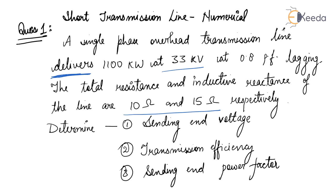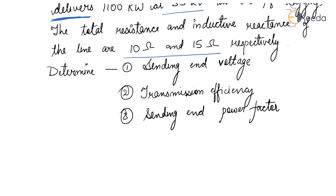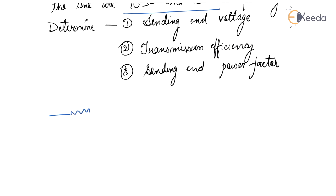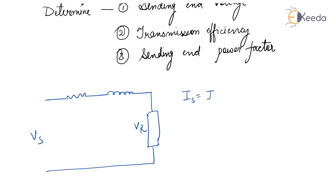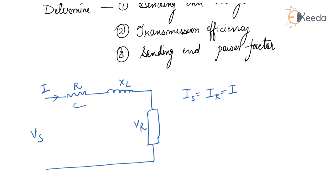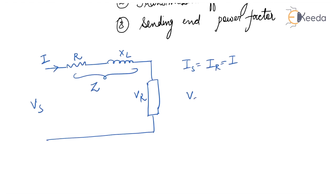We have to find out the sending end voltage. The equivalent circuit for this has R and XL in series. Load is 0.8 lagging. VS is the sending end voltage, VR is the receiving end voltage, and in case of a short transmission line, IS equals IR equals I. Applying KVL: VS equals VR plus IR plus I times XL, where Z equals R plus jXL.